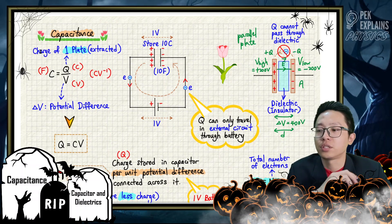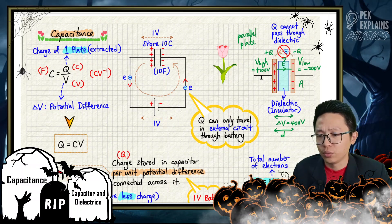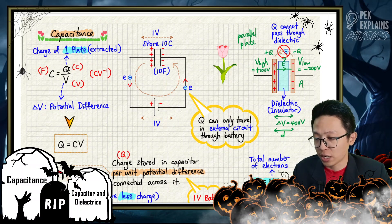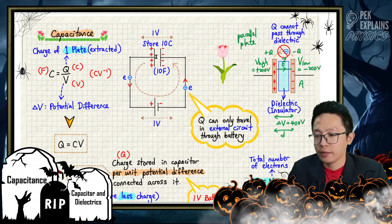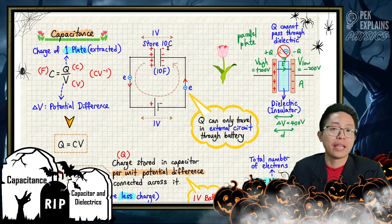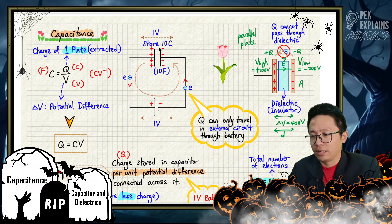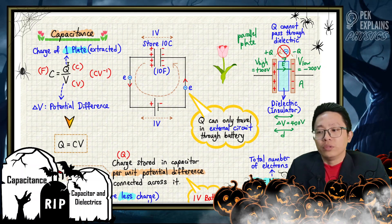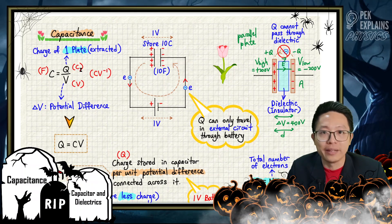Now, this Q — the charge — is the charge of how many plates? A capacitor has two plates. Do we add up the charge of both plates? No. This charge here actually means how much charge is extracted from one plate and gathered at the other plate during the charging process. It is not the total of both plates.